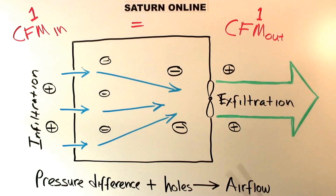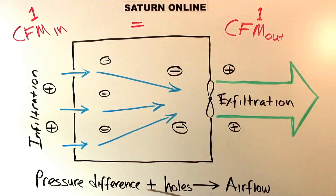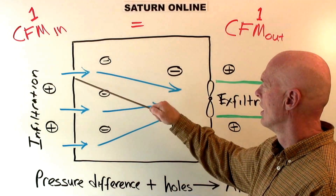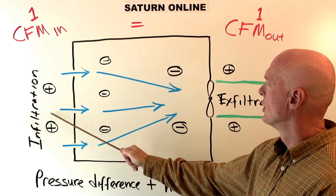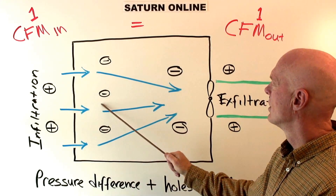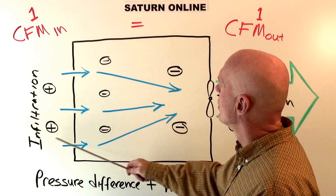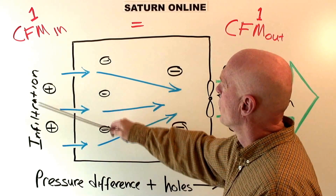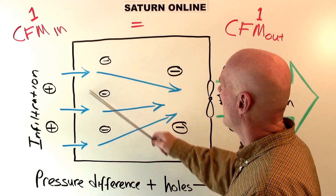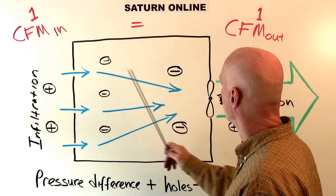So we have a pressure difference, and the pressure difference in this case is caused by the fan. We have holes in the box, and we have infiltration because there's a pressure difference — here it's positive, here it's negative. Air is always naturally going to flow from positive to negative, from an area where the density is higher to an area where the air density is lower. That's the way it naturally flows.